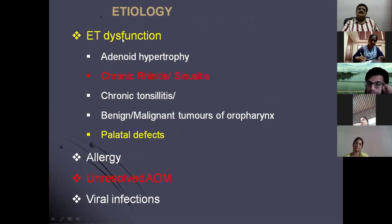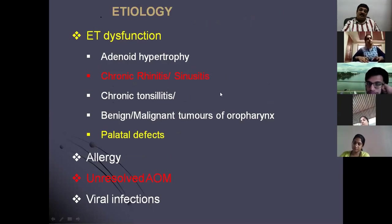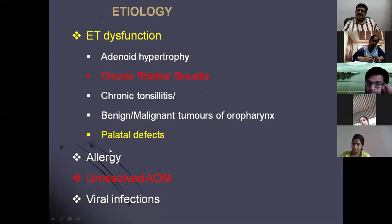The etiology remains the same — obstruction in the nasopharynx in the form of adenoid hypertrophy, rhinitis, sinusitis, or something similar. But there is no retrograde infection from the nasopharynx through the eustachian tube into the middle ear. That is the difference. There is eustachian tube dysfunction, but no retrograde infection. It can also be caused by allergy.